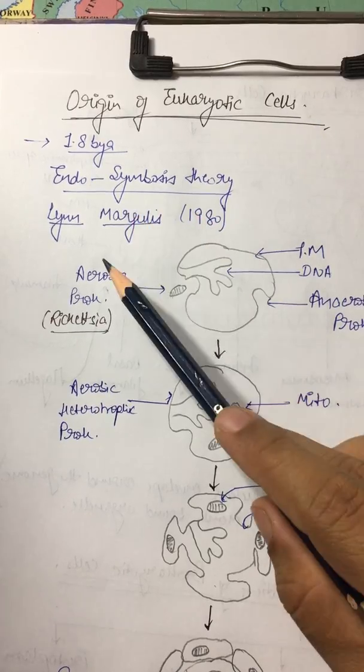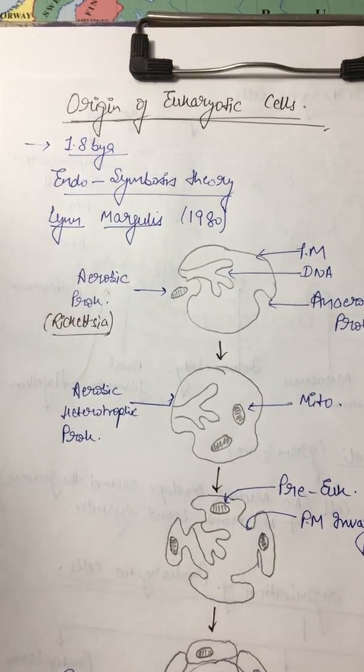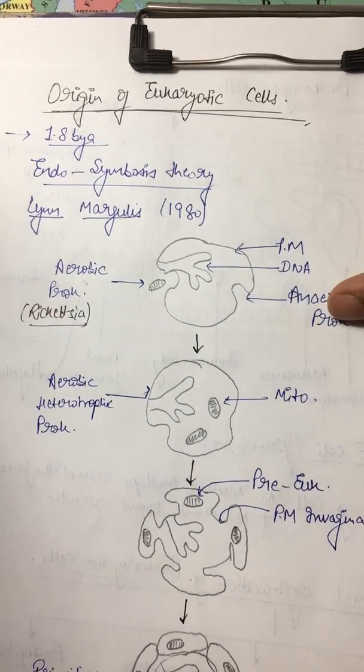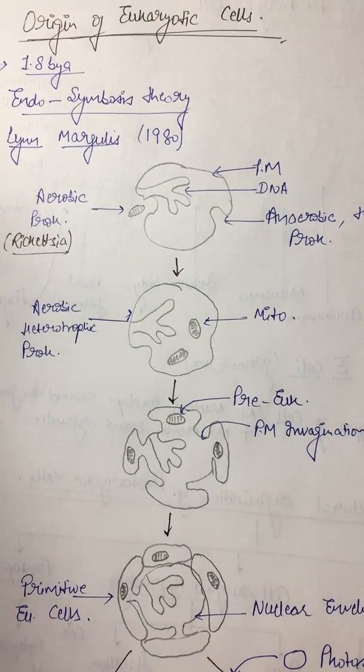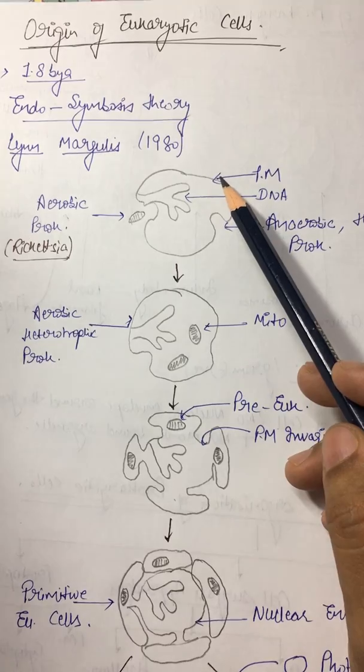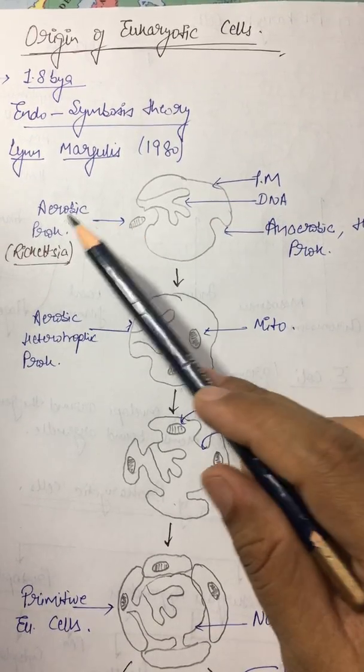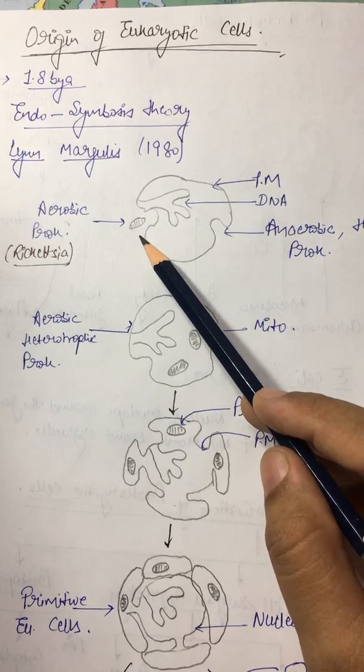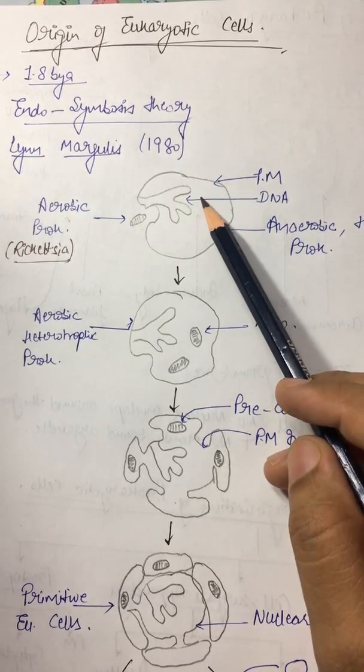Which was given by Lynn Margulis in 1980. According to this theory, eukaryotes evolved from primitive prokaryotes by the mechanism of endosymbiosis. A small prokaryote, which is aerobic, found residence in a large prokaryote.